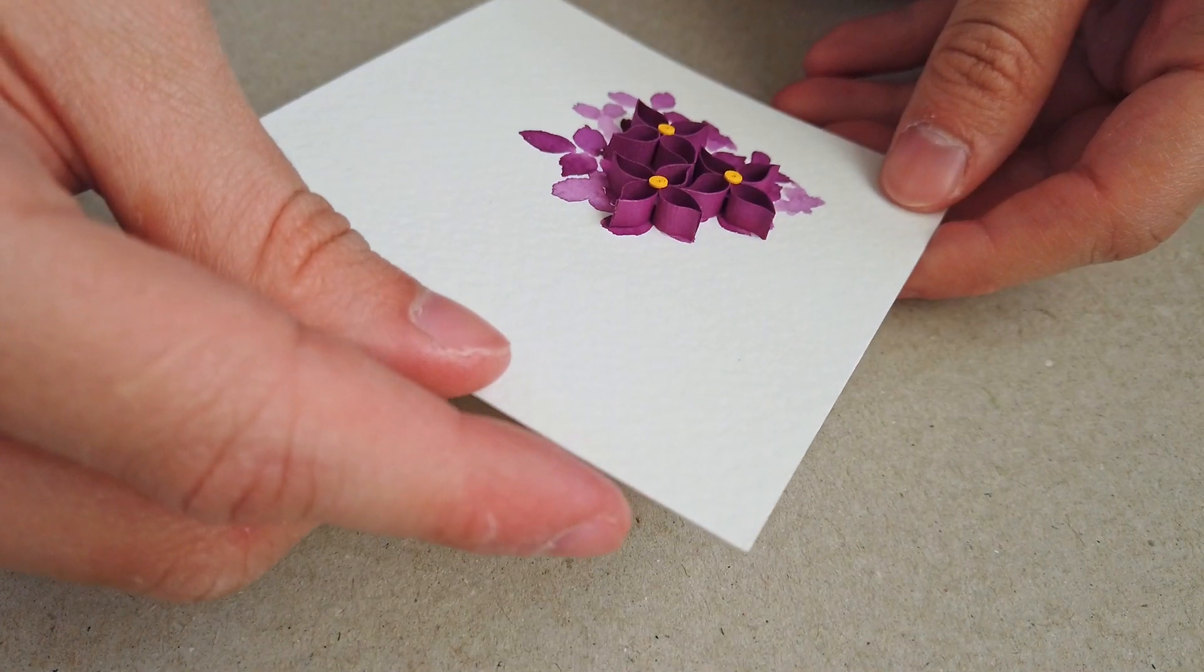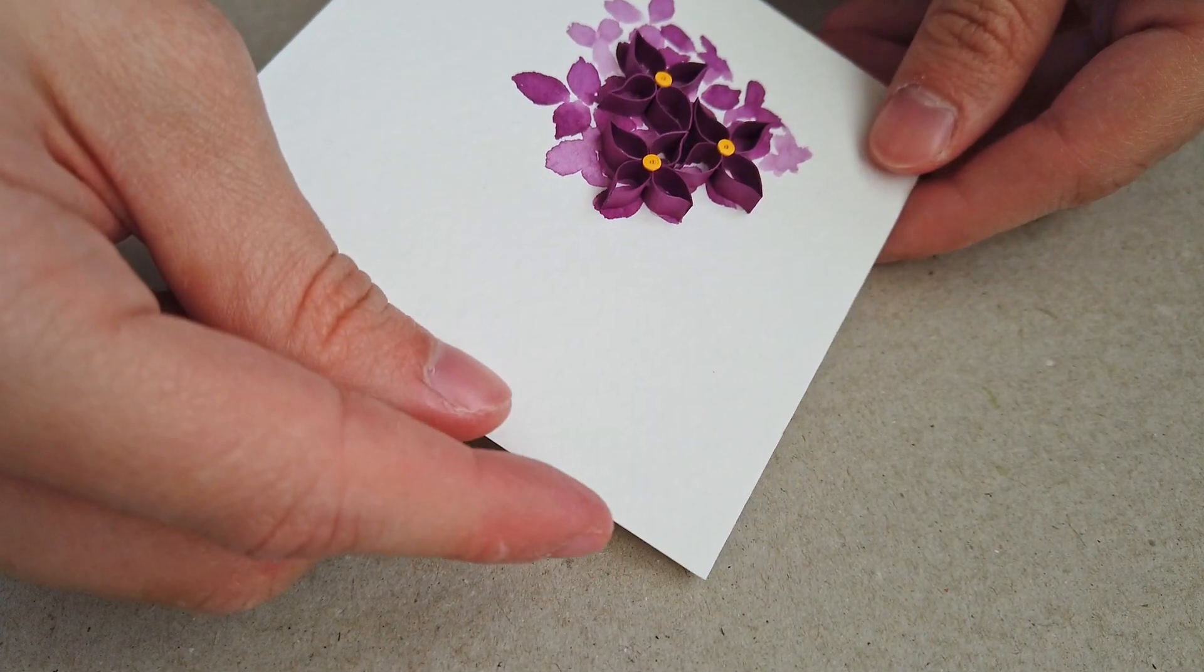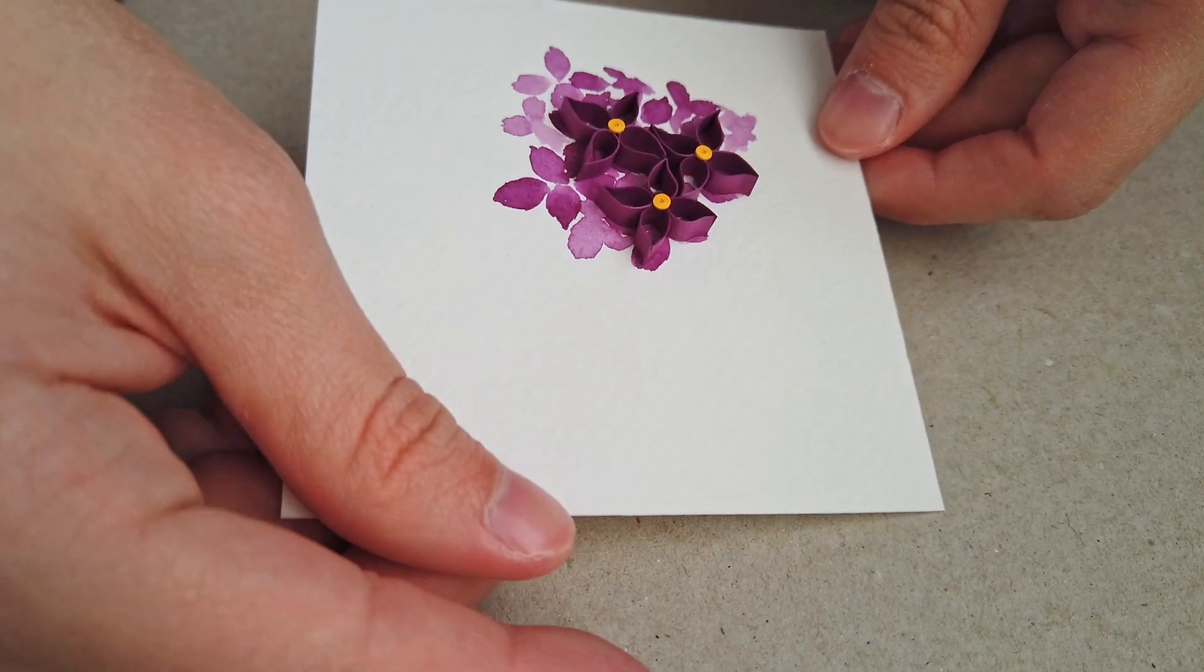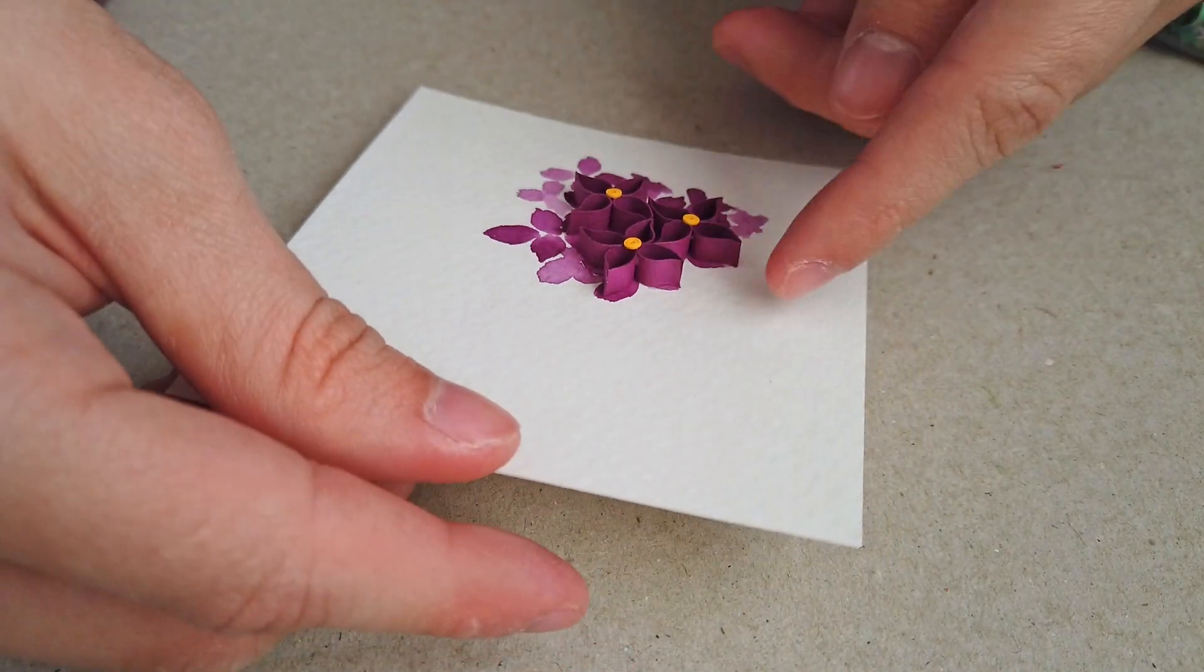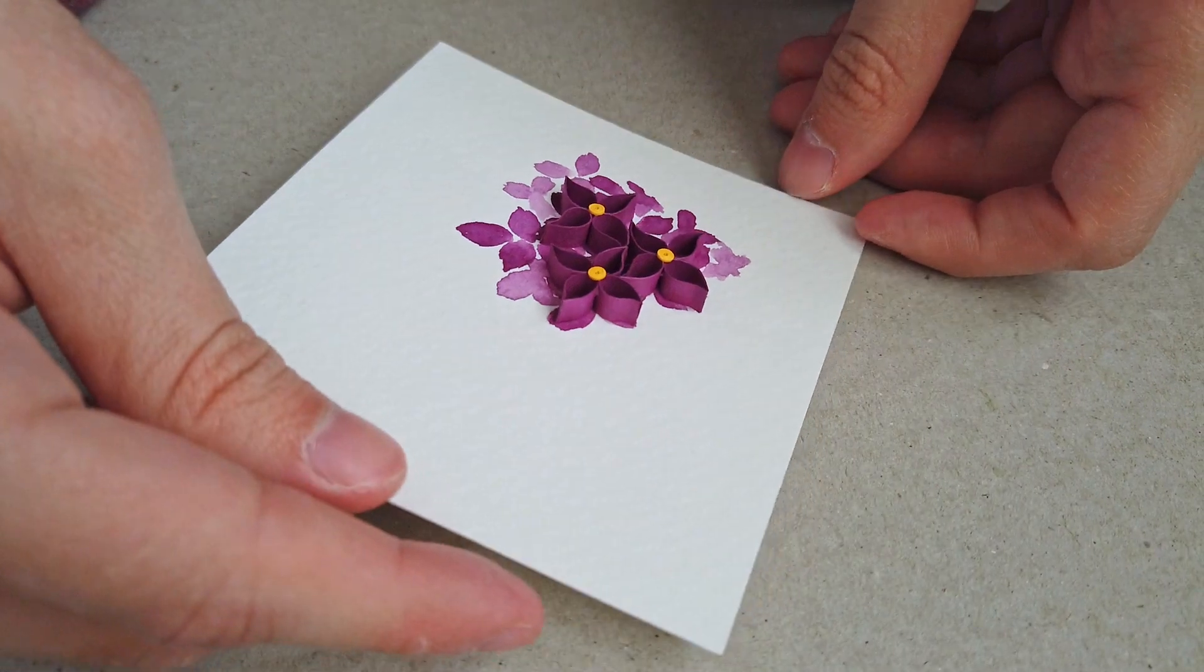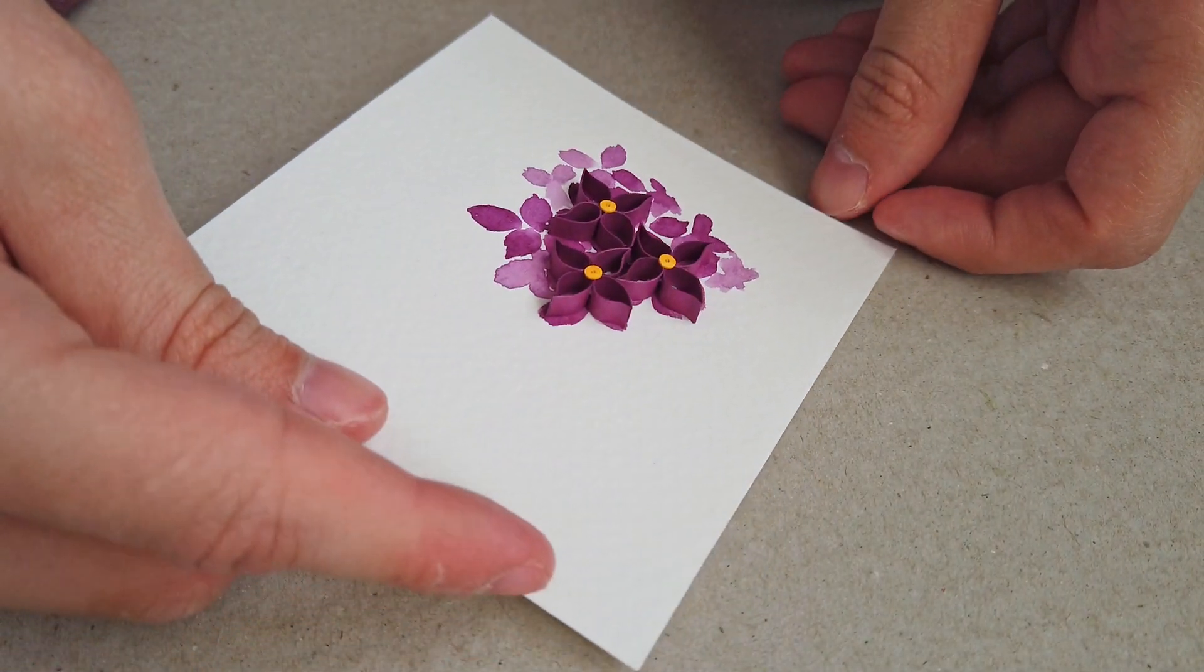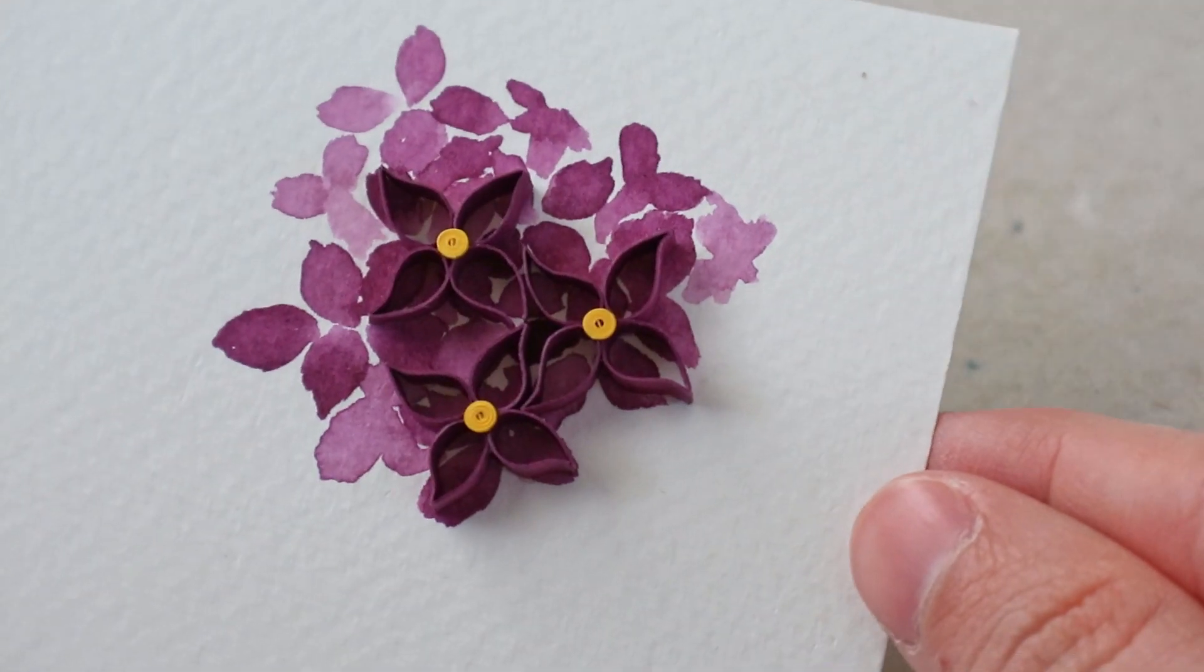Basically that's all that I do, and once that area, that little bit of glue that you still have left, dries, it really becomes invisible and clean all around, like you can see here on my example.